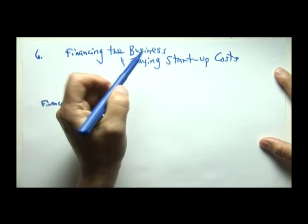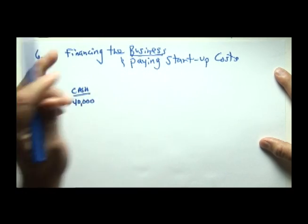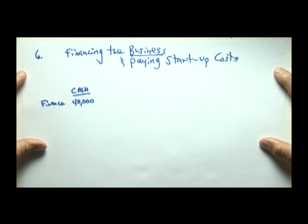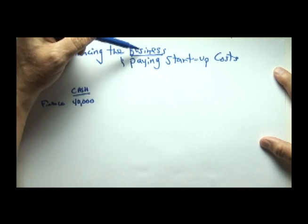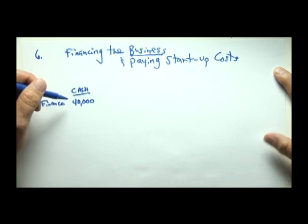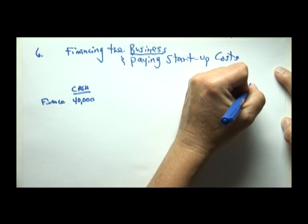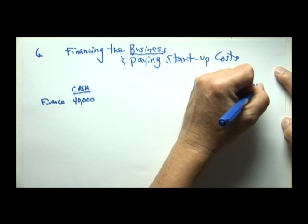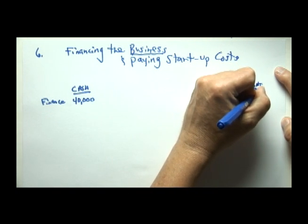So the business's cash — this is the business entity, not the individual student anymore. We must keep track of the student's activity separate and distinct from the business activity. Cash went up $40,000 and contributed equity went up $40,000.